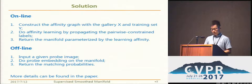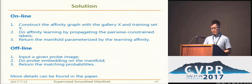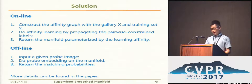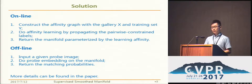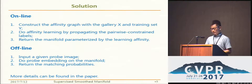Our method can be divided into the online path and the offline path. To improve its efficiency, the graph-based affinity learning is only done offline. In the online path, we propose probe embedding to efficiently compute the matching probabilities between the probe and the gallery images. You can find more details in our poster and paper.